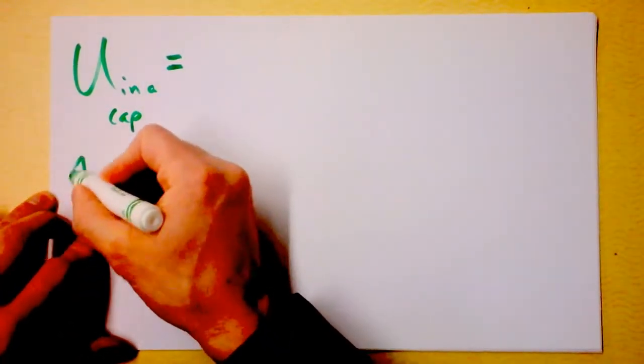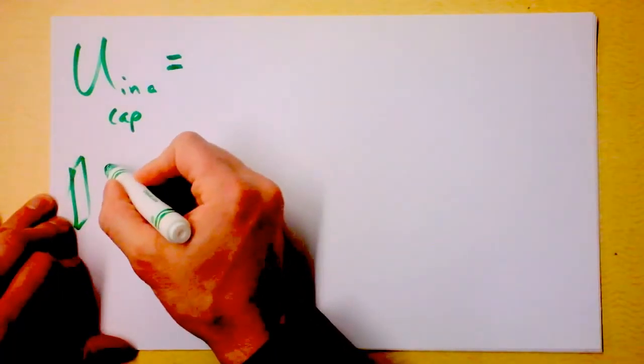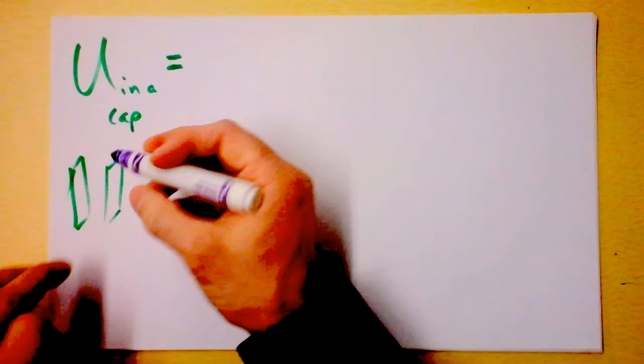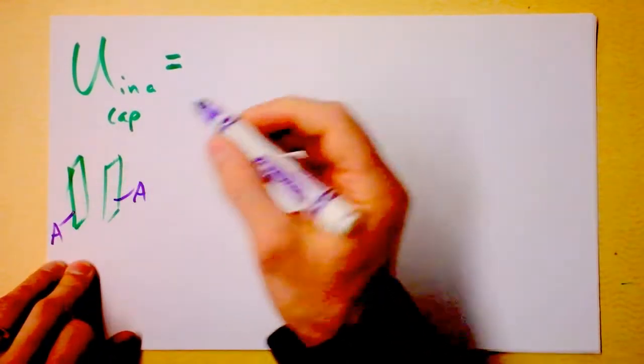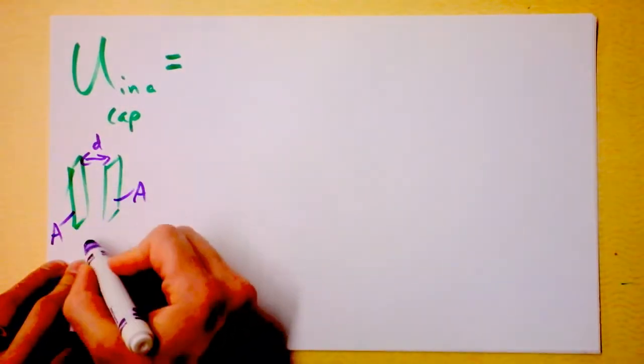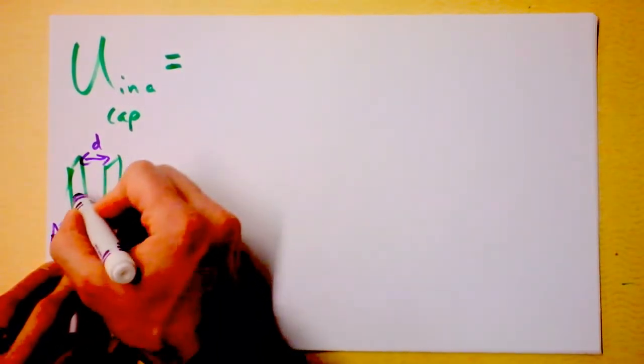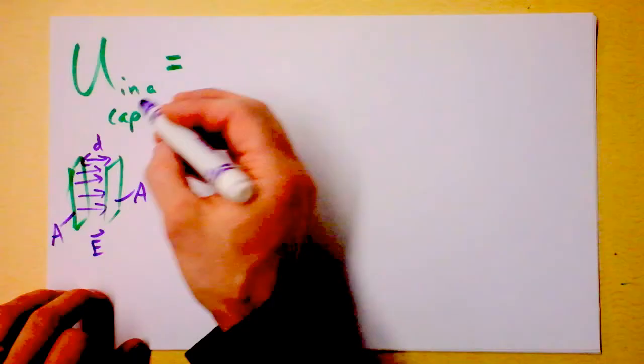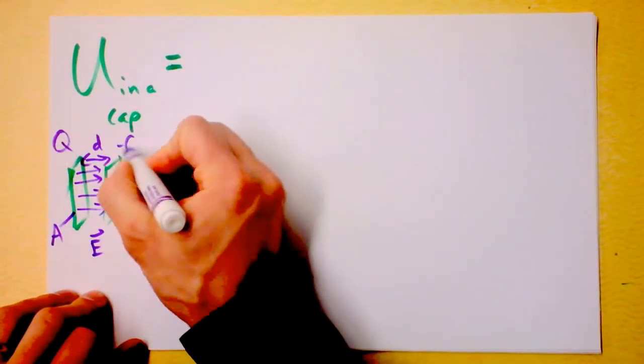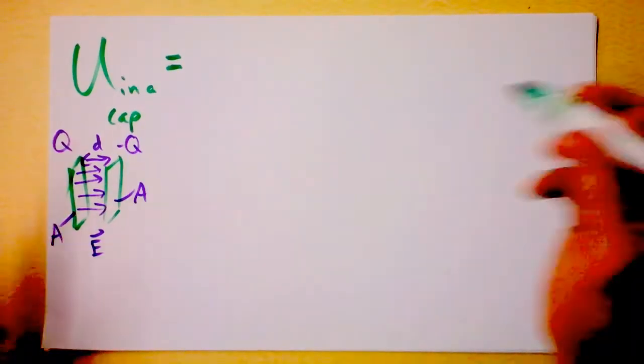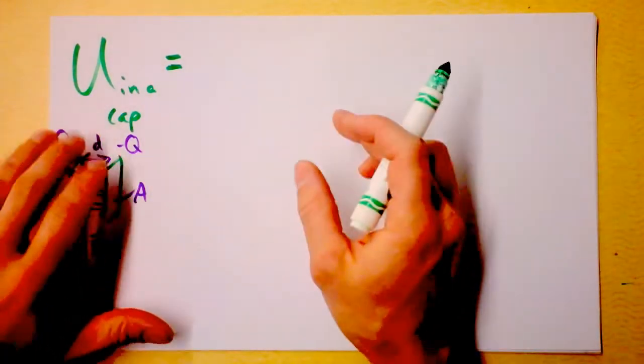This is the energy stored in a parallel plate capacitor. We're going to have two plates and they will each have a certain area and there will be a separation between them and there will be an electric field in between them, probably pointing some direction. There will also be a charge on one plate, positive, and the opposite charge on the other plate if it's being used in a standard configuration.